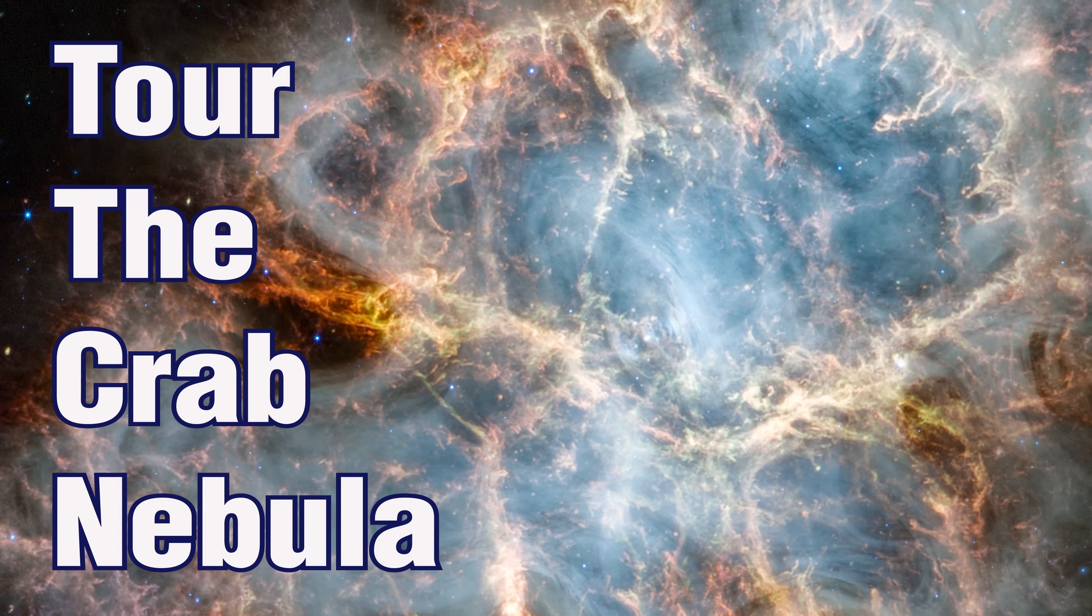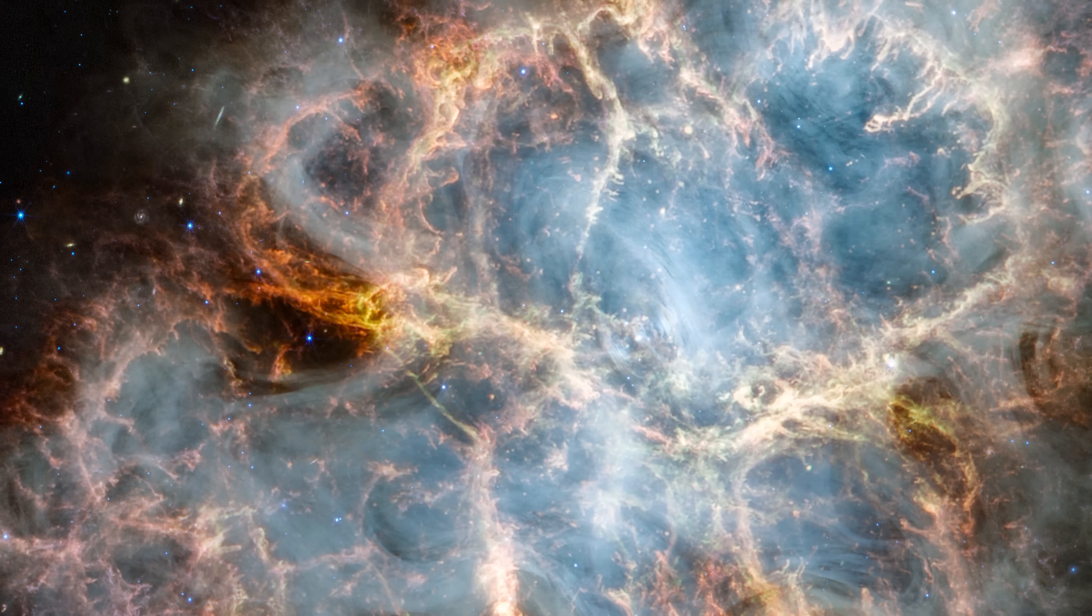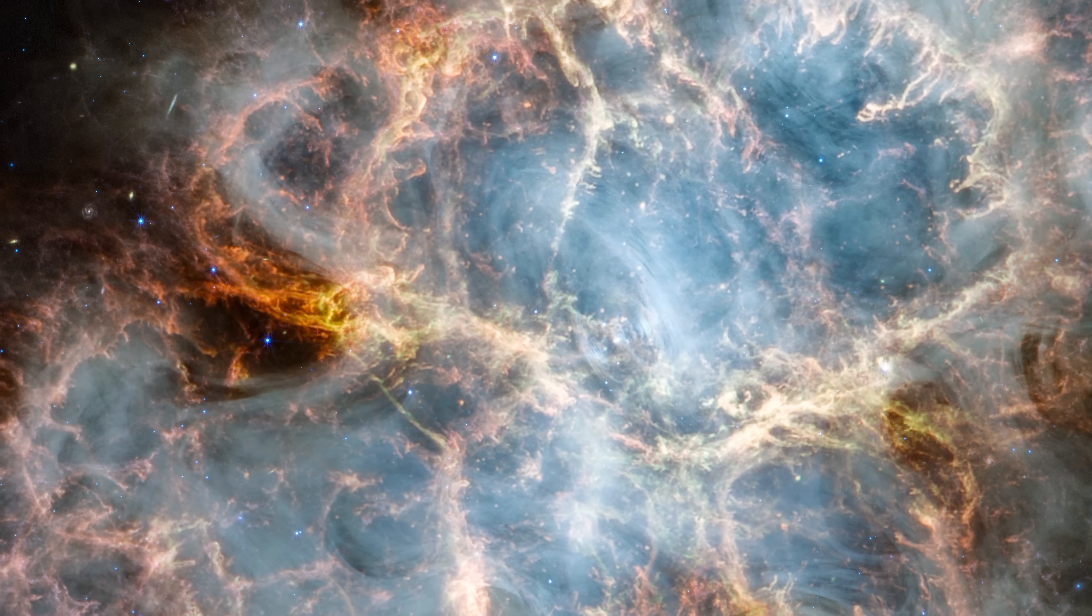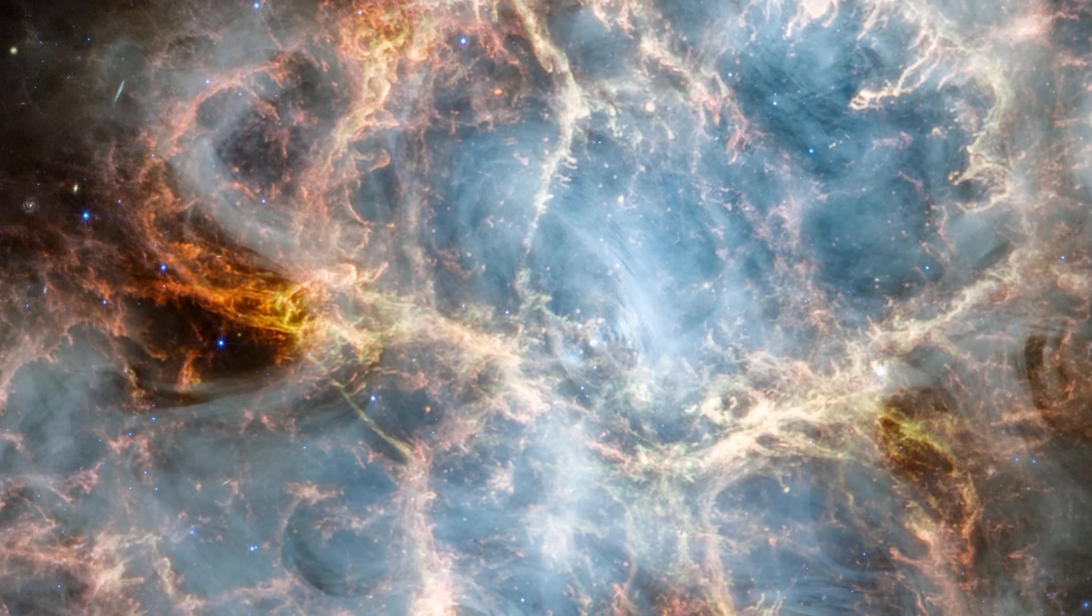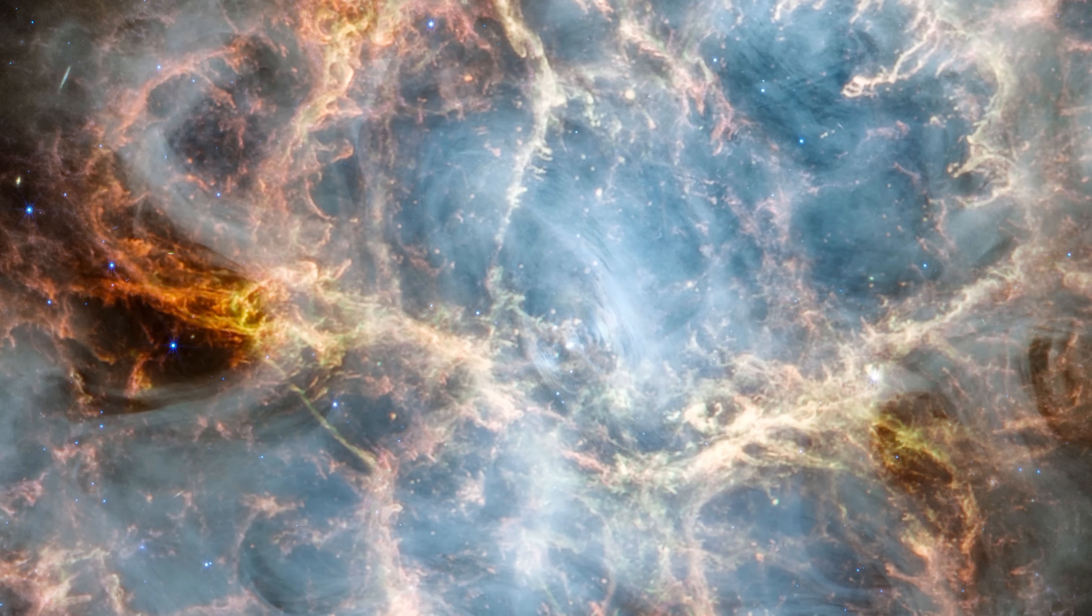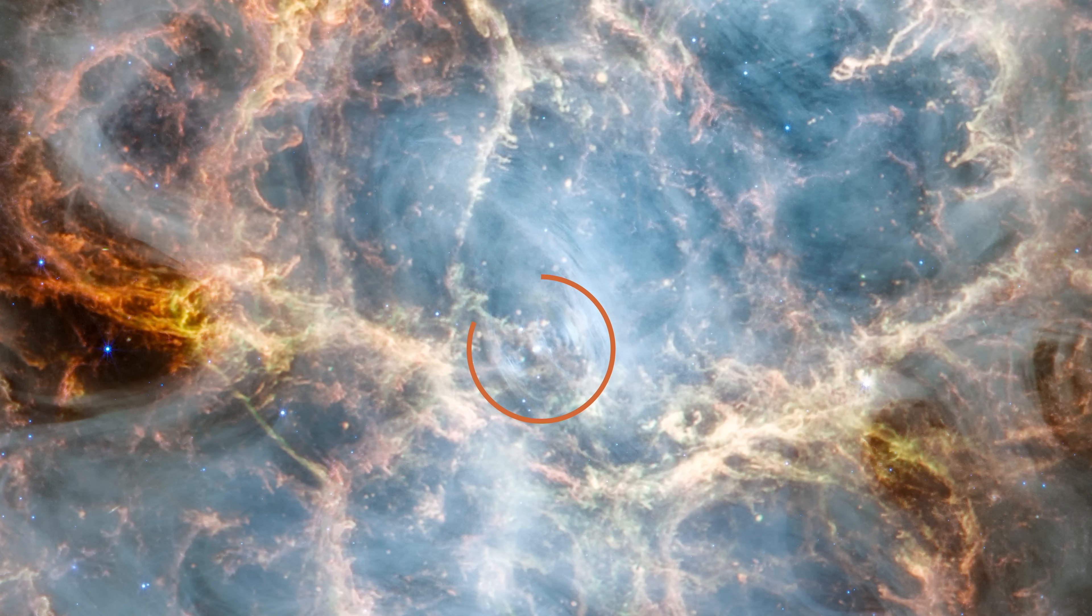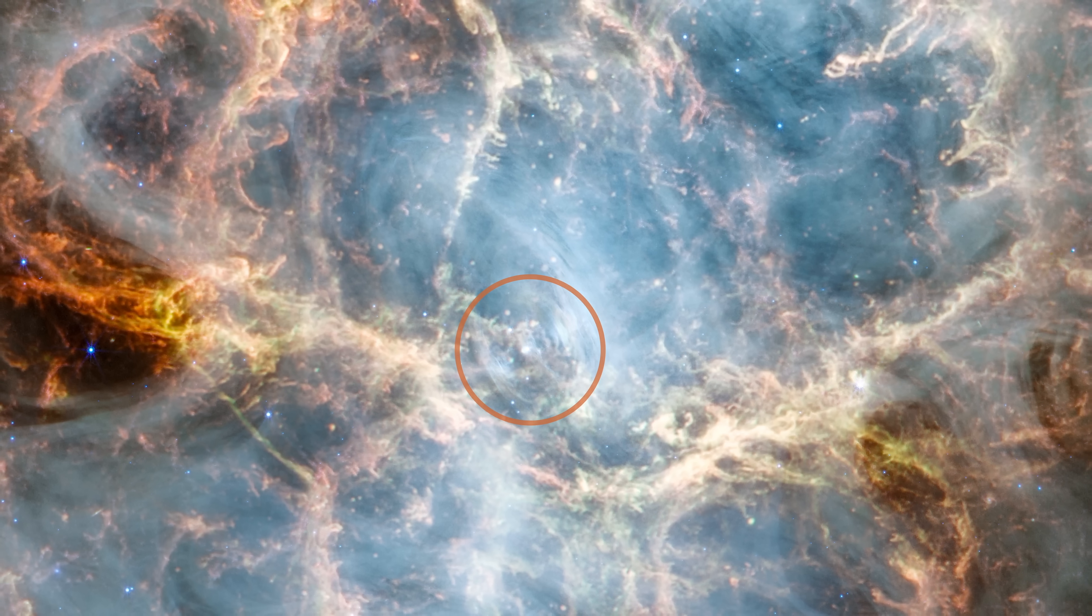The Crab Nebula is a supernova remnant, a cosmic structure resulting from the explosion of a star. A vast, expanding cloud of gas and dust surrounds one of the densest objects in the universe, a neutron star.